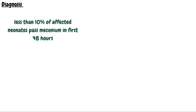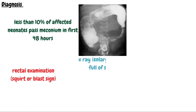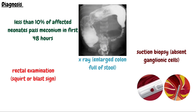Now we will talk about the diagnosis of Hirschsprung's disease. Typically 99% of normal term infants pass meconium in the first 48 hours, but less than 10% of infants with Hirschsprung's disease do so. On rectal examination, there may be explosive leakage of gases and accumulated feces, known as the squirt or blast sign. Abdominal X-ray may show a large colon full of stool. The diagnosis is confirmed by suction biopsy, which shows absence of ganglionic cells.